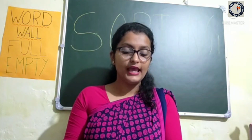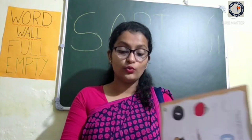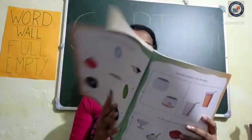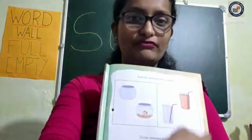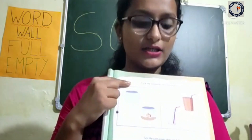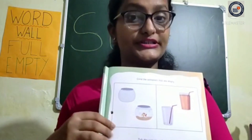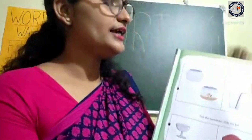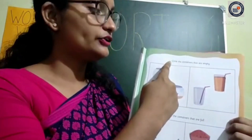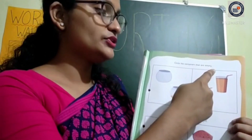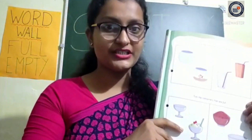Now, on page number 15, let us see what it has been written there and what we have to do. It is written here: 'Circle the containers that are empty.' So we have to circle the containers which are empty.